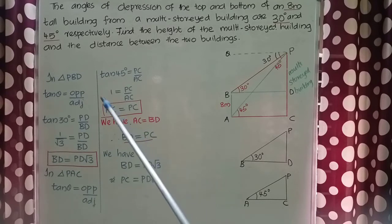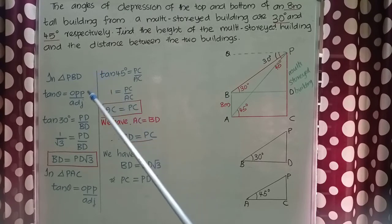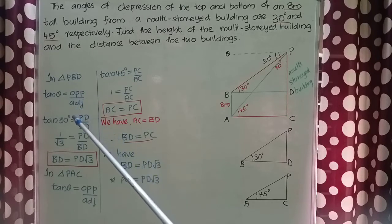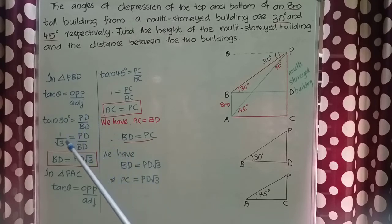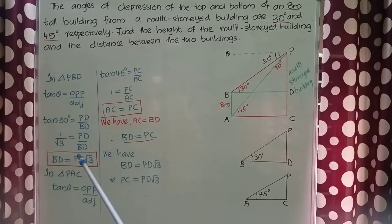Let us take the ratio in triangle PBD. tan θ = opposite side / adjacent side, that is, tan 30° = PD / BD. We know tan 30° = 1/√3, so we get 1/√3 = PD / BD. Cross multiplying, we get BD = PD√3.